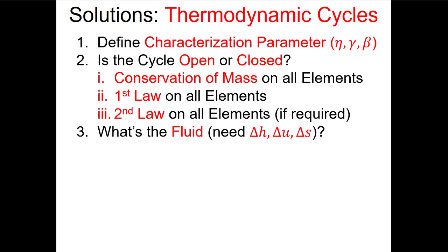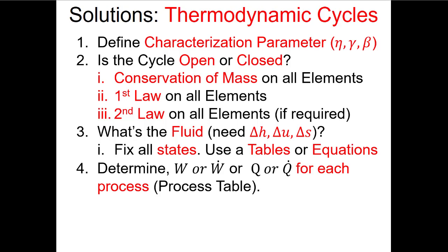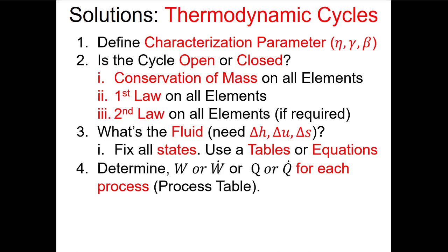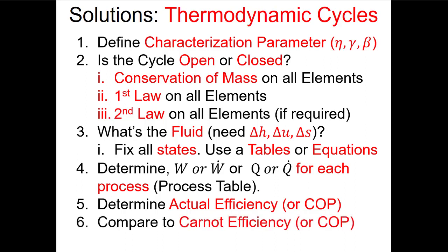From those steps we'll get symbolic solutions, but to get numerical solutions we need values of specific enthalpies, specific internal energies, or specific entropies. This requires knowing the working fluid. Once we fix all the states — maybe using tables or equations assuming constant specific heat — we go back to the symbolic solutions and add those values to get power, work, heat transfer, or heat transfer rates. That helps us define thermal efficiency or COP and compare to the Carnot efficiency for an ideal cycle.